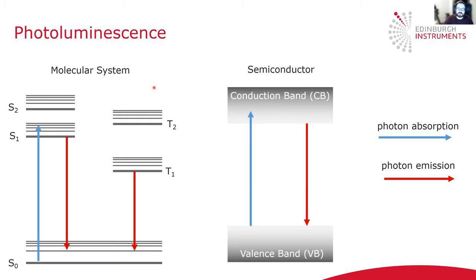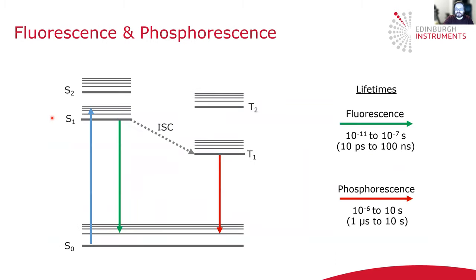In molecular systems that have distinct singlet and triplet levels, marked T and S on this diagram, you can further subdivide photoluminescence into fluorescence and phosphorescence, depending on the origin of the state that the light comes from. The ground states of nearly all molecules are singlet states, and when a photon is absorbed, the molecule is promoted to a singlet excited state due to conservation of angular momentum. Radiative relaxation from the singlet excited state back to the singlet ground state is called fluorescence, and this has a lifetime of about 10 picoseconds to 100 nanoseconds.